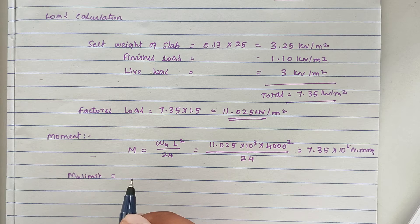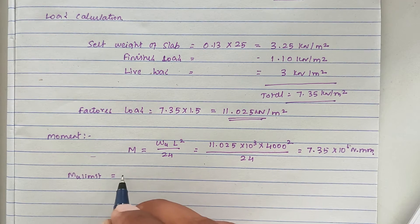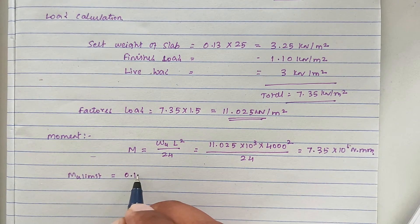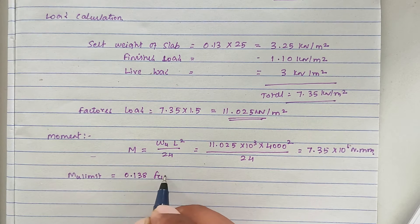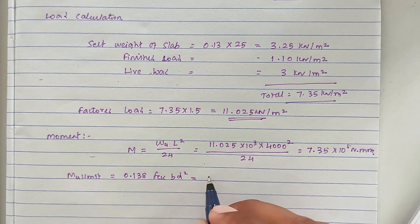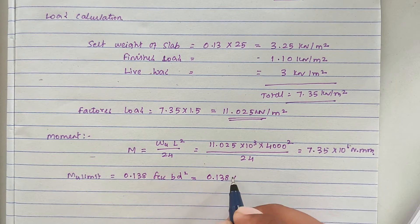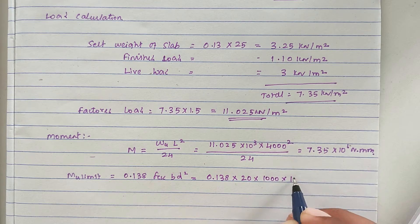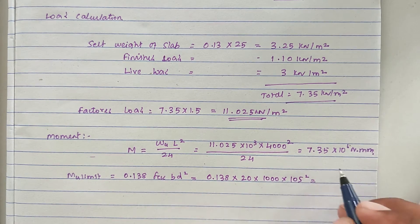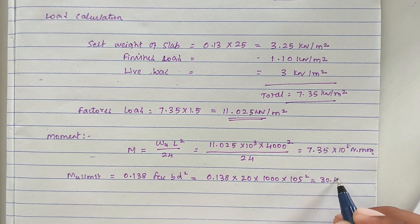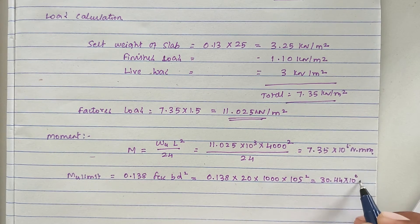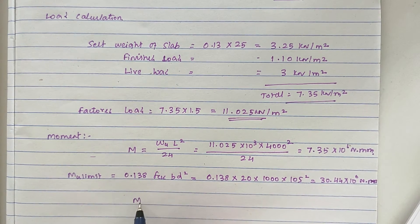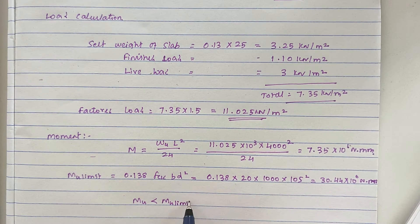Now we check whether the section is under-reinforced or over-reinforced by finding Mu limit. Mu limit equals 0.138 × fck × b × d². Substituting: 0.138 × 20 × 1000 × 105² gives Mu limit = 30.44 × 10⁶ N·mm. Since Mu (7.35 × 10⁶) is less than Mu limit (30.44 × 10⁶), the section is under-reinforced.